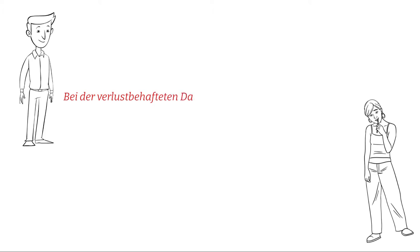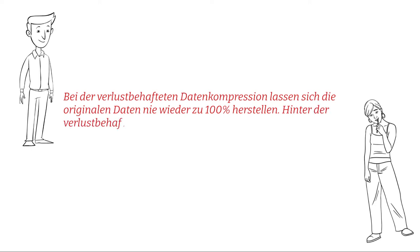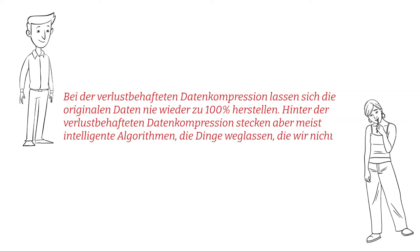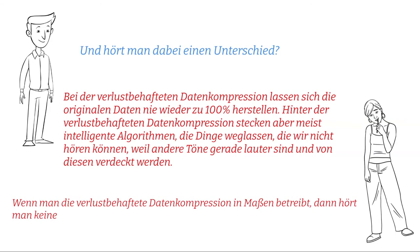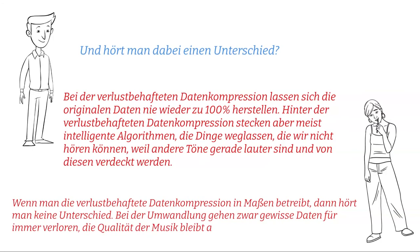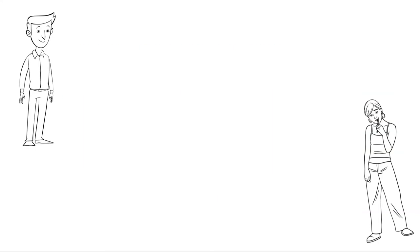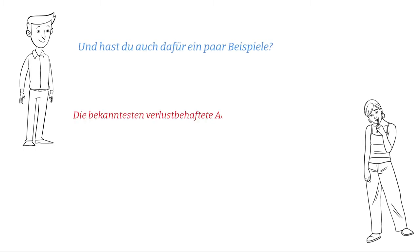Bei der verlustbehafteten Datenkompression lassen sich die originalen Dateien nie wieder zu 100% herstellen. Hinter der verlustbehafteten Datenkompression stecken aber meist intelligente Algorithmen, die Dinge weglassen, die wir nicht hören können, weil andere Töne gerade lauter sind und von diesen verdeckt werden. Und hört man dabei einen Unterschied? Wenn man die verlustbehaftete Datenkompression in Maßen betreibt, dann hört man keinen Unterschied. Die bekanntesten verlustbehafteten Audioformate sind MP3, AAC, OGG oder WMA.